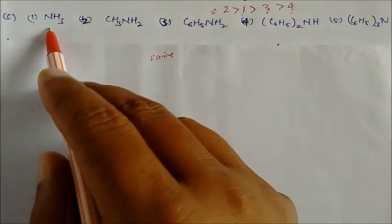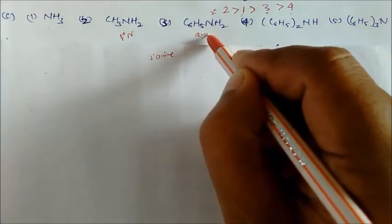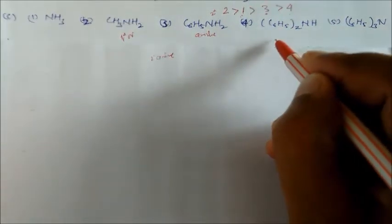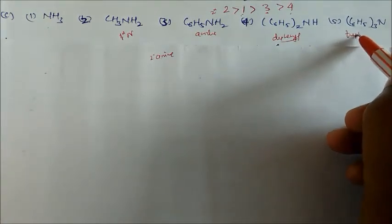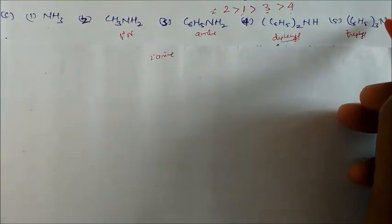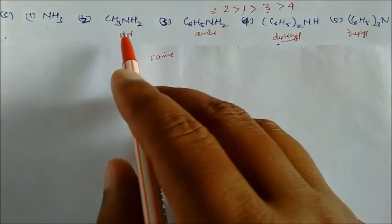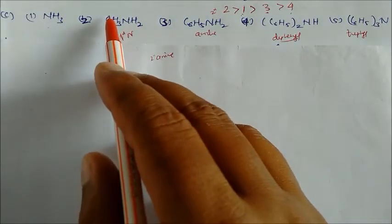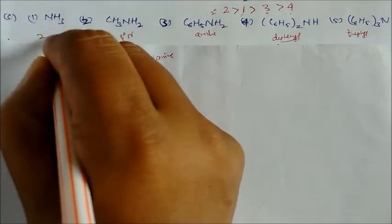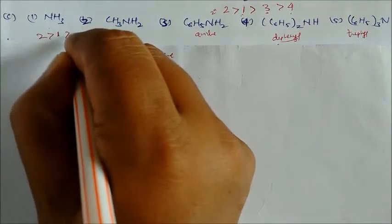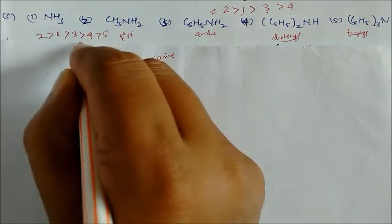Next, we compare ammonia, a primary amine, aniline, diphenylamine, and triphenylamine. In triphenylamine, the lone pair is not available at all; in diphenylamine, it is less available. The order of basicity is: primary amine (2) > ammonia (1) > aniline (3) > diphenylamine (4) > triphenylamine (5).